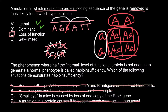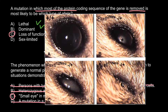The only correct answer is answer C: small eye in mice is caused by loss of one copy of the PAX6 gene. Here is a picture demonstrating this genetic disorder. As you can see, the normal mouse has two normal alleles (plus/plus). The heterozygotes with different mutations in this gene show this genetic disorder. So as you can see, sometimes even one normally functioning allele is not enough, and heterozygous conditions in mice can lead to serious genetic disorders.